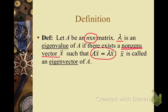Notice that what this says is that this matrix times vector x is equivalent to the scalar lambda times x. And x, again, is a nonzero vector — it is called the eigenvector.